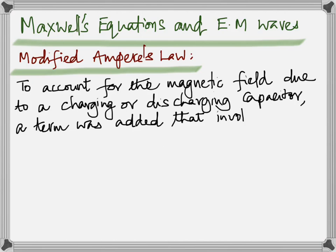Therefore, Maxwell introduced a second term in Ampere's law. The closed line integral of B dot dl equals μ₀I, which is already there, plus an additional term to account for the changing electric field.